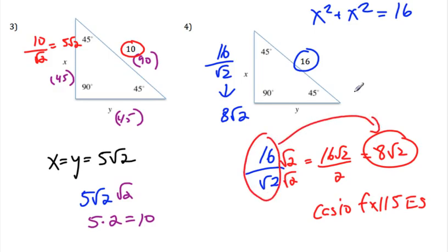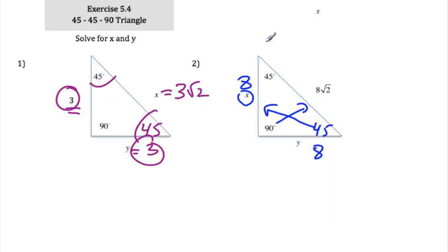When they give you the 90-side and you're going backwards to find the 45-side, you divide by radical 2. In the earlier example, we went the other way and multiplied by radical 2.